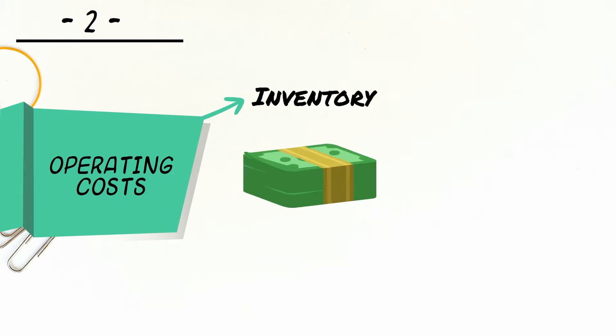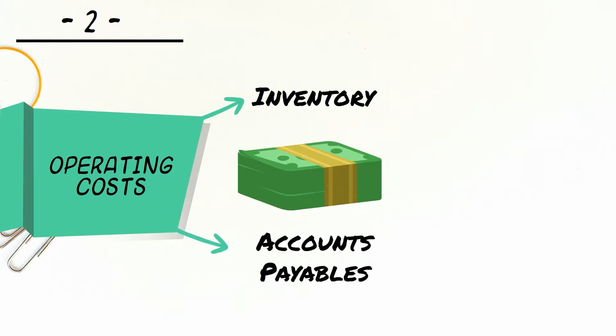In order to sell the product, it has to be produced, and for that, a firm incurs operating costs. There are costs incurred in buying and maintaining raw materials, work in process and finished goods. These items show up as inventory on the assets side of a balance sheet.